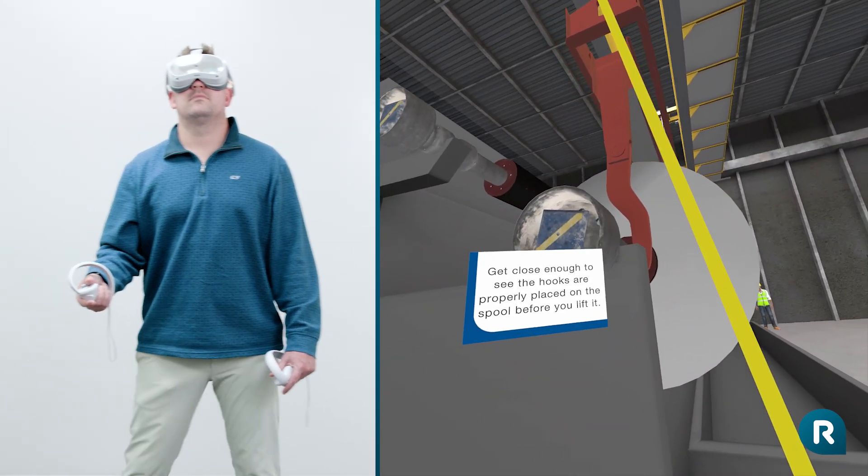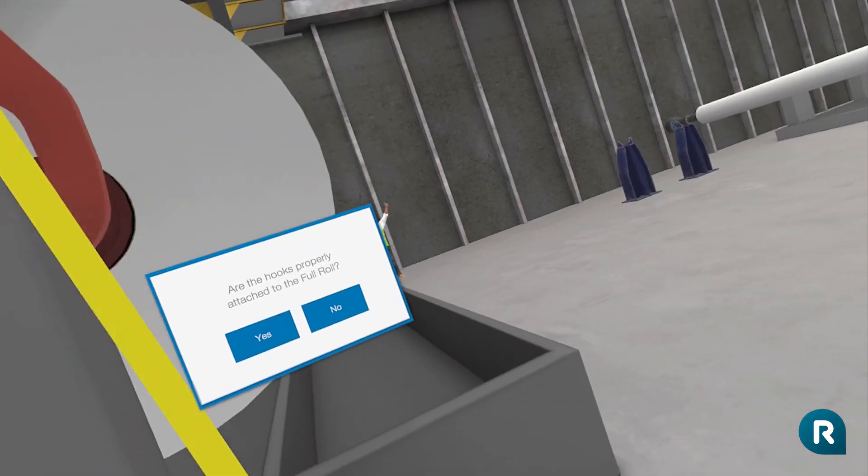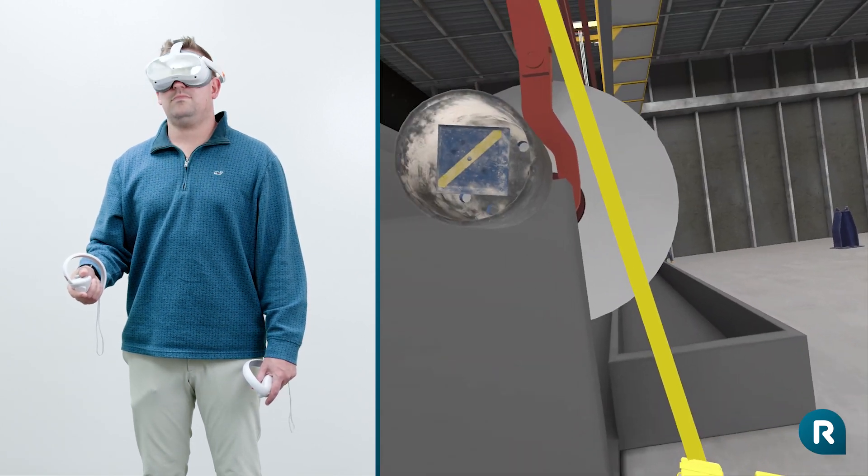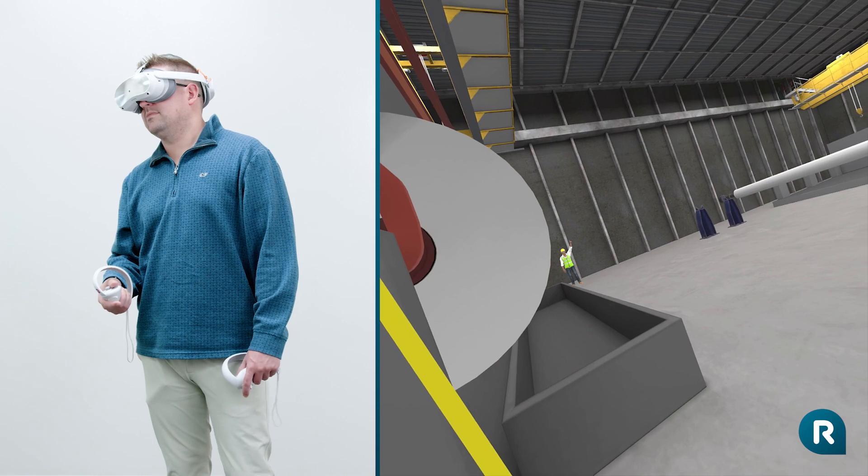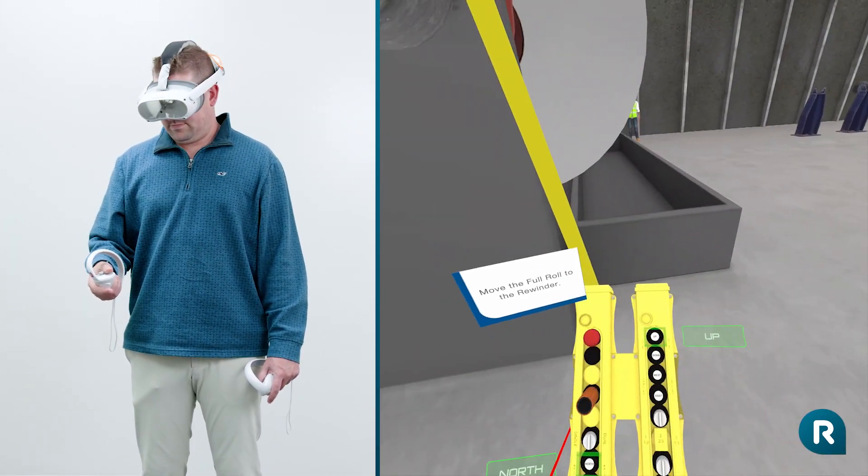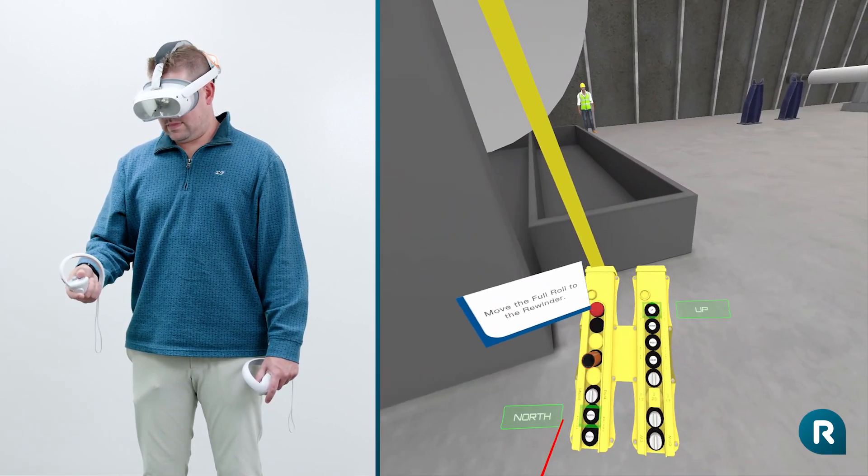Before we lift the roll, ensure both ends are properly hooked. Great job! The paper roll is obstructing your view of the far hook, but your spotter is letting you know the hook is correctly attached. Let's move the full roll to the rewinder. Make sure you rotate the roll 180 degrees before setting it down.